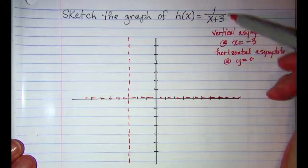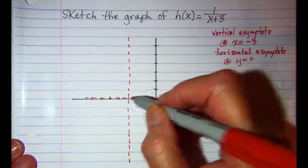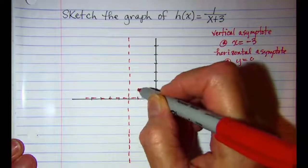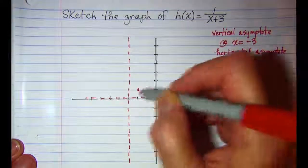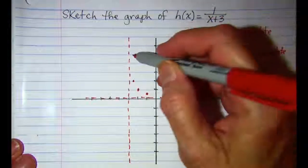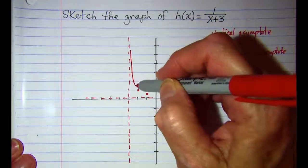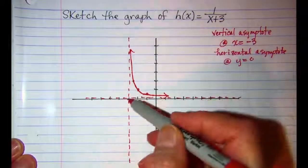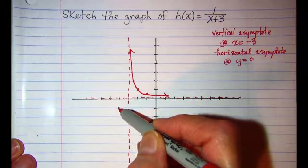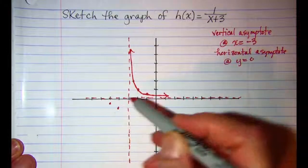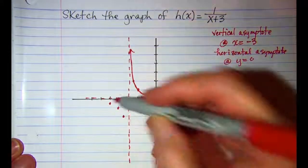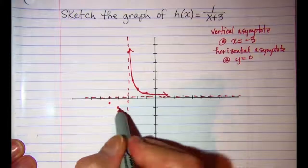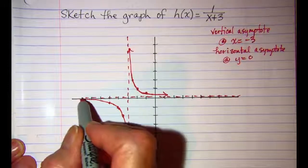We have nothing else going on in this function, so we can use our guidelines for the y equals one over x function. Right one up one, right two up a half, right a half up two — then our curve on this side. On the left side: left one down one, left two down a half, left a half down two. Our curve is asymptotic to those dotted lines.